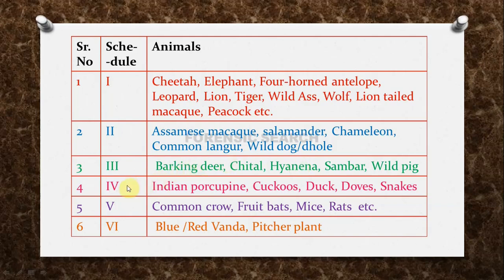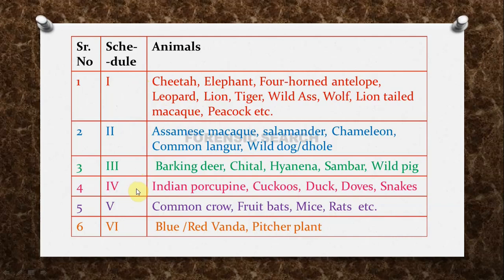Schedule 4 contains Indian porcupine, cuckoos, ducks, doves, and snakes. Schedule 5 animals include common crow, fruit bats, mice, rats, etc. Schedule 6 contains plants which are forbidden for cultivation, with examples including blue vanda or red vanda and pitcher plants. Animals in schedules 1 to 4 are known as wildlife animals, and their hunting is prevented by this Wildlife Protection Act.